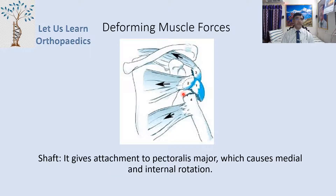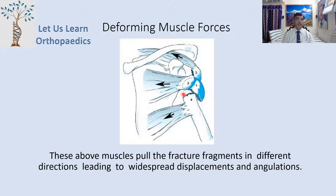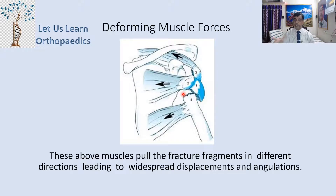The shaft gives attachment to the deltoid and internal rotators, and the anatomical neck has no muscle attachment. Hence, if fractured there, the chances of AVN are more because there will be no blood supply to the fractured head of the humerus. These muscles pull the fracture fragments in different directions, leading to widespread displacement and angulation.